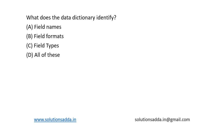This is a question from databases: what does the data dictionary identify? Four options are given. A data dictionary is a file or a set of files that contains a database's metadata. The data dictionary contains records about other objects in the database, such as data ownership, data relationships to other objects, and other data. It is a very crucial component to a database.